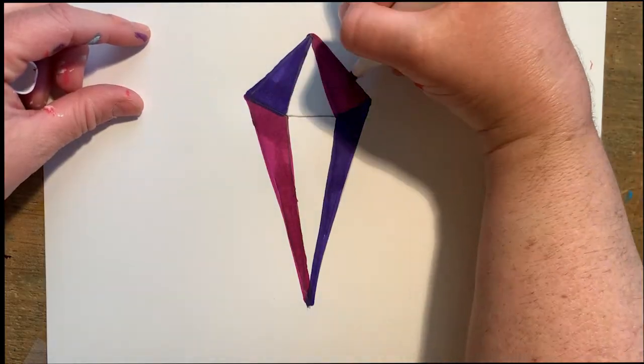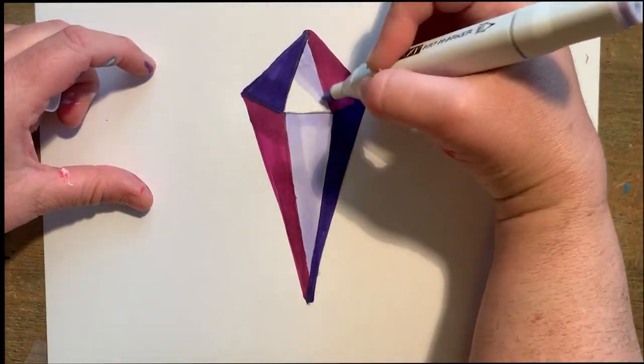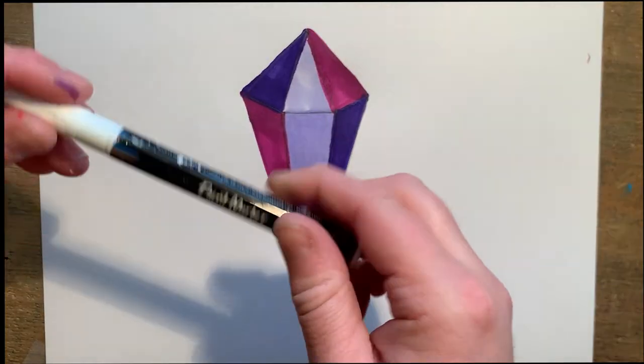I'll use my darker shades on the outside and I'll use my lighter purple on the inside. With my marker, I'll color the top one lighter and I'll layer it to the bottom one darker.